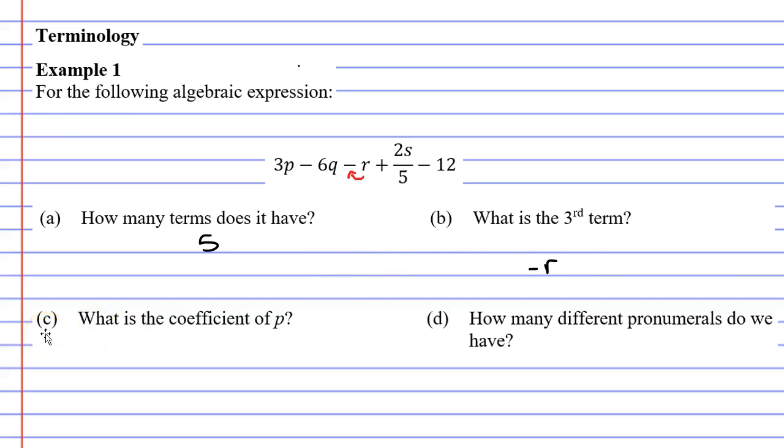Moving now onto question C, it says, what is the coefficient of p? And the coefficient is the number in front of the pronumeral. So looking at our p, the number in front of it is the number 3 for question C.